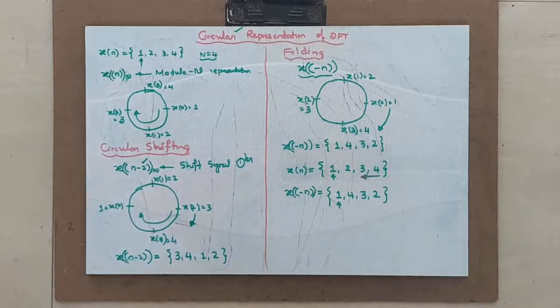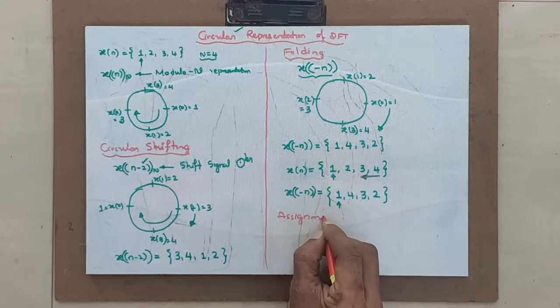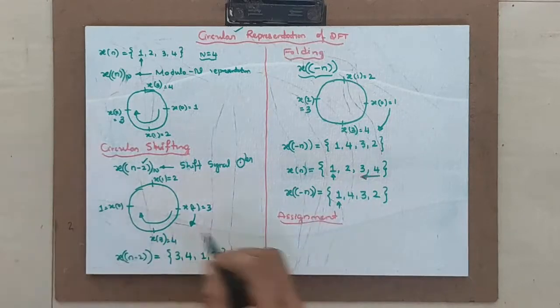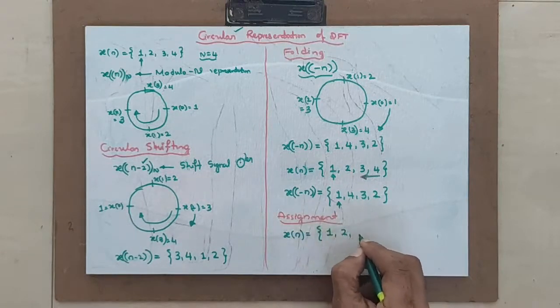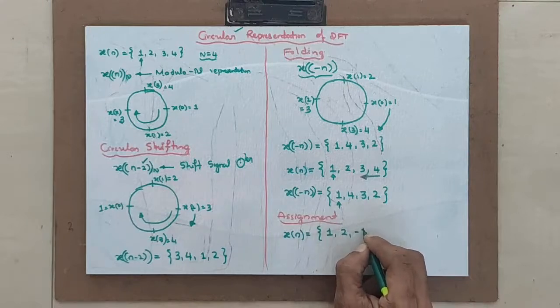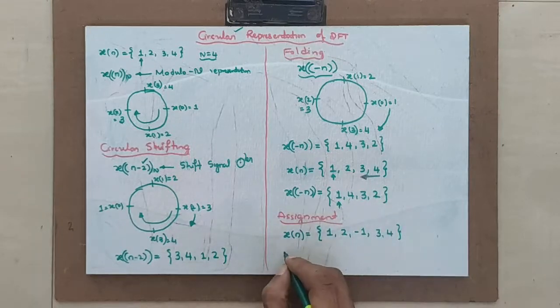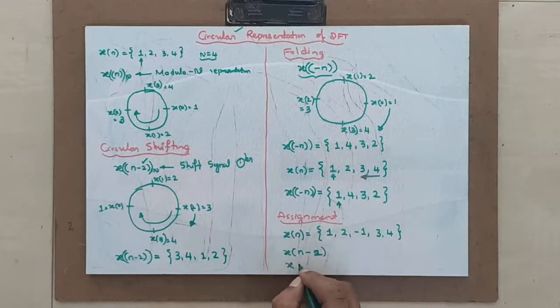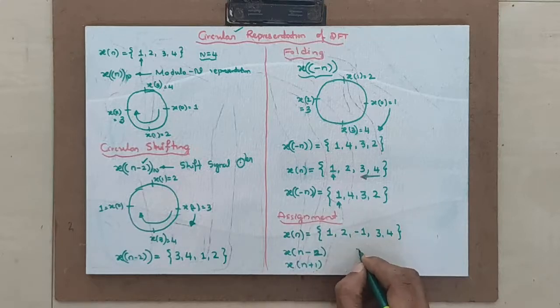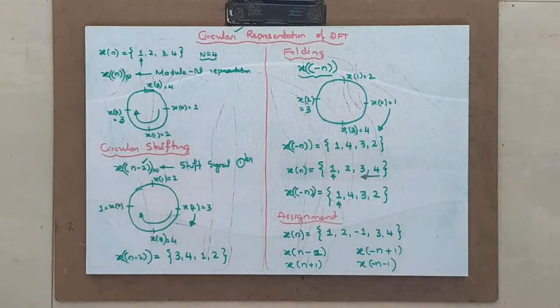Whatever assignment, I just give you now an assignment. Assignment is, x of n is equal to 1, 2, minus 1, 3, 4. I want you to: x of n minus 2, x of n plus 1, x of minus n plus 1, x of minus n minus 1.